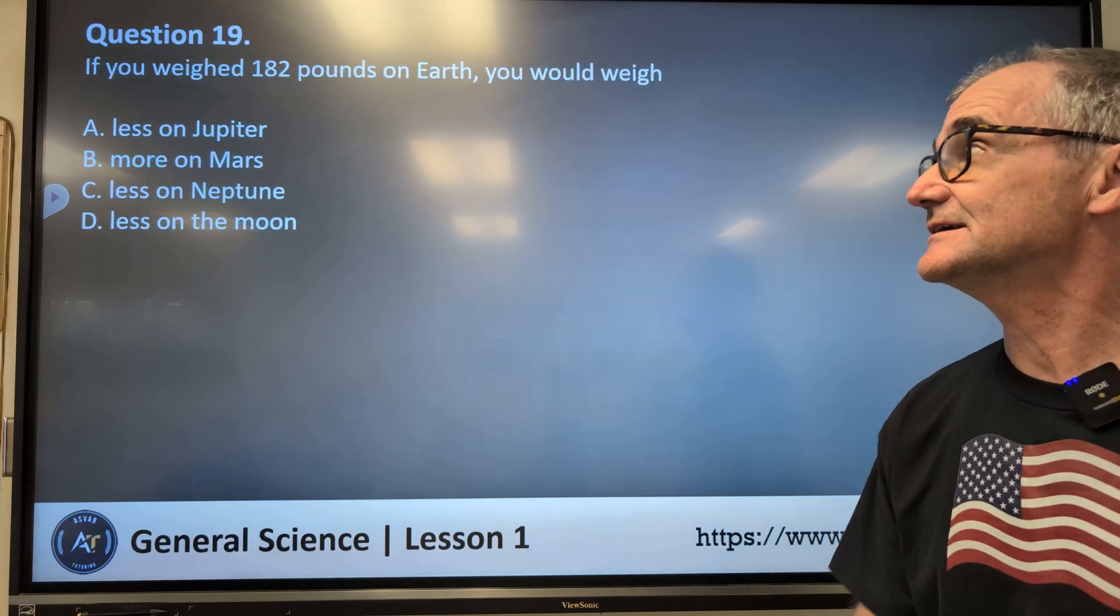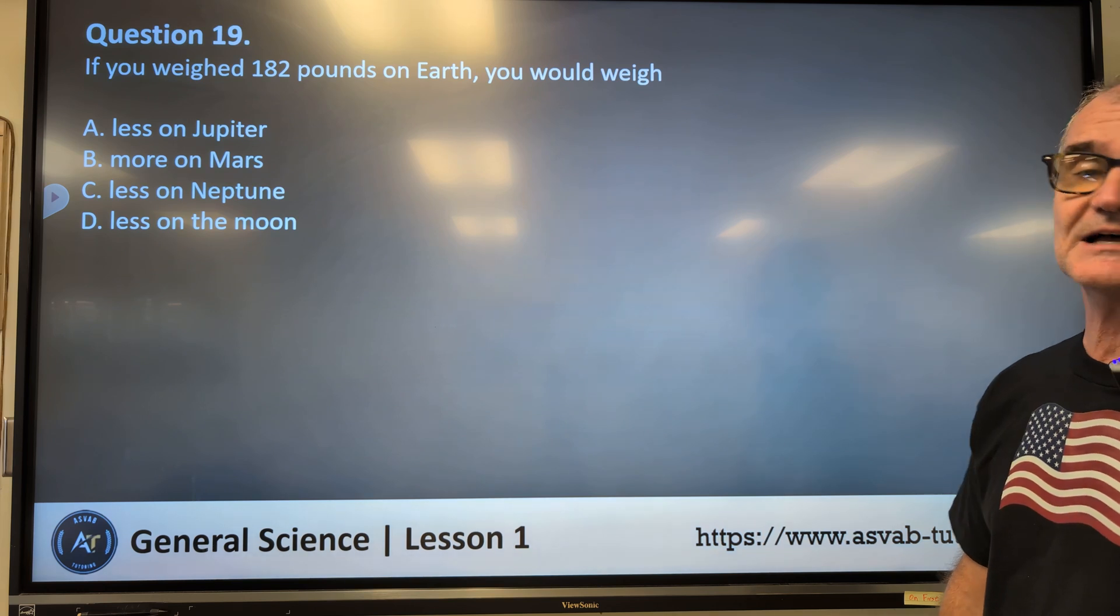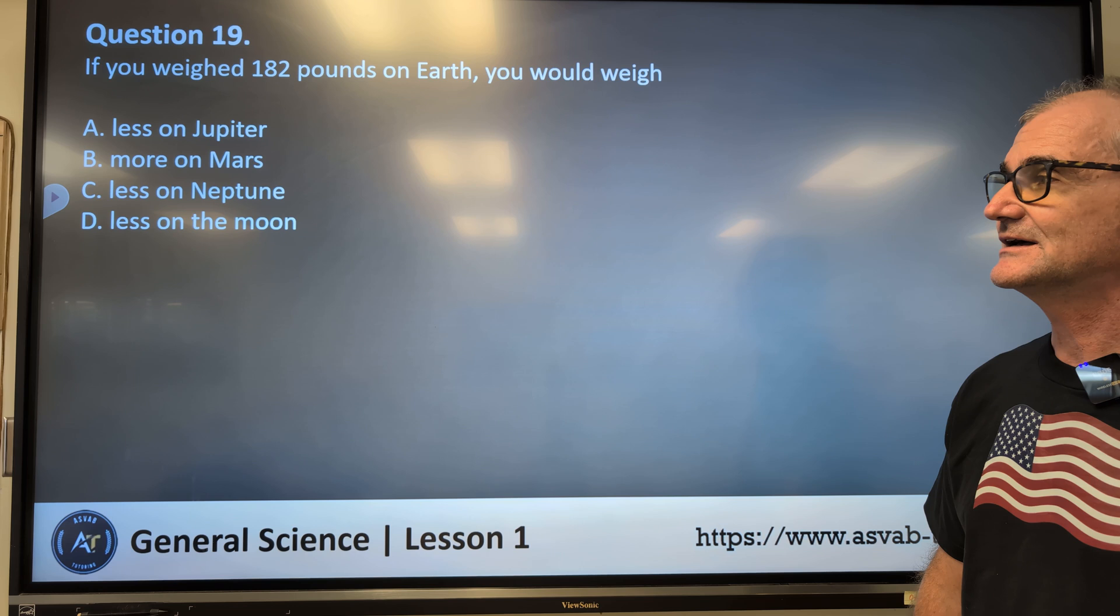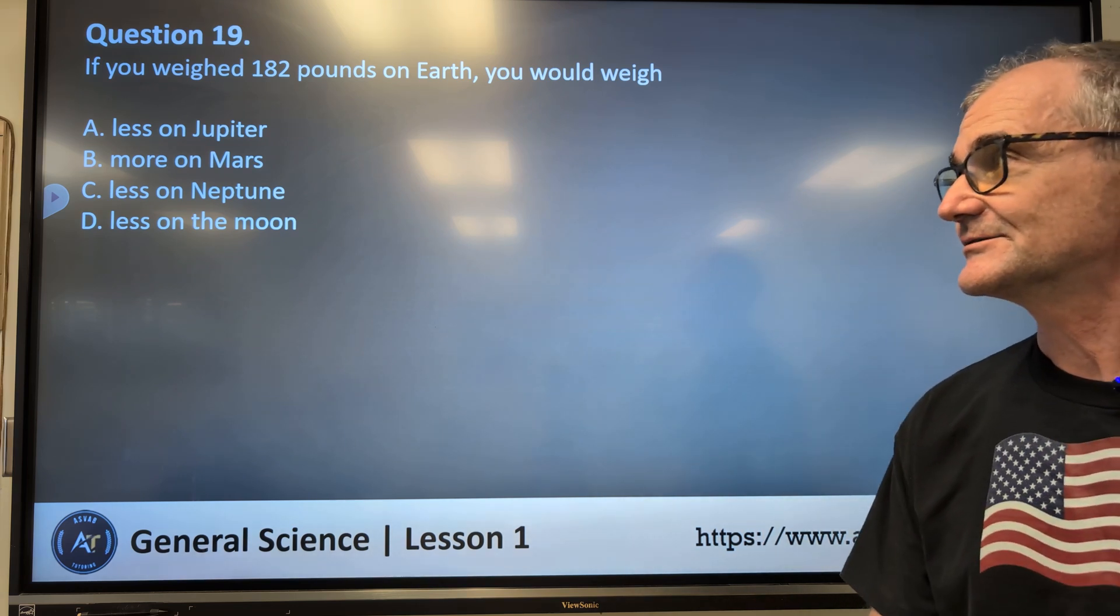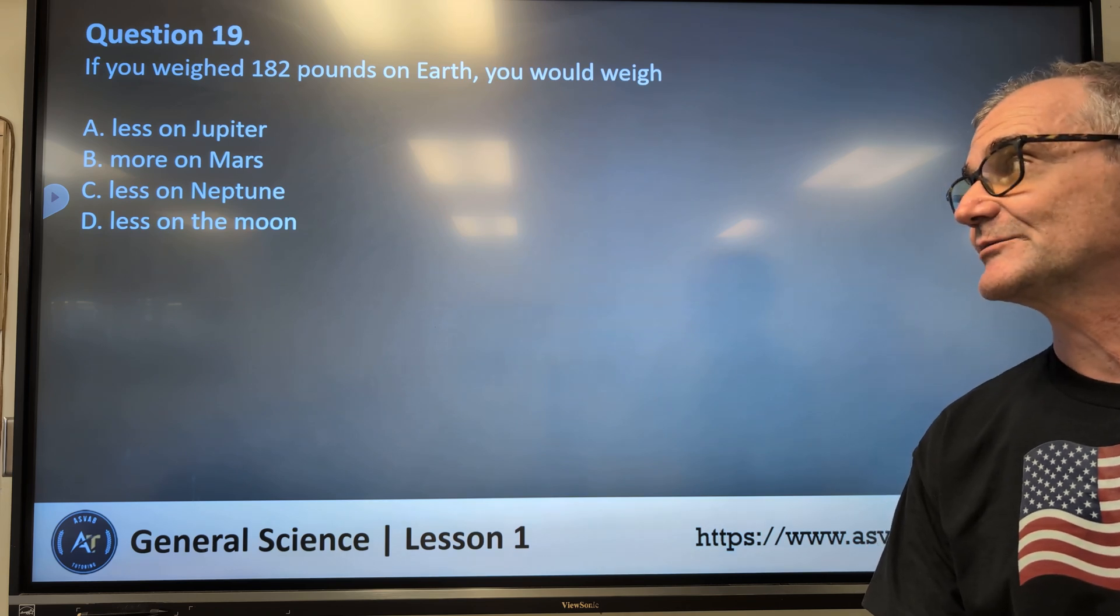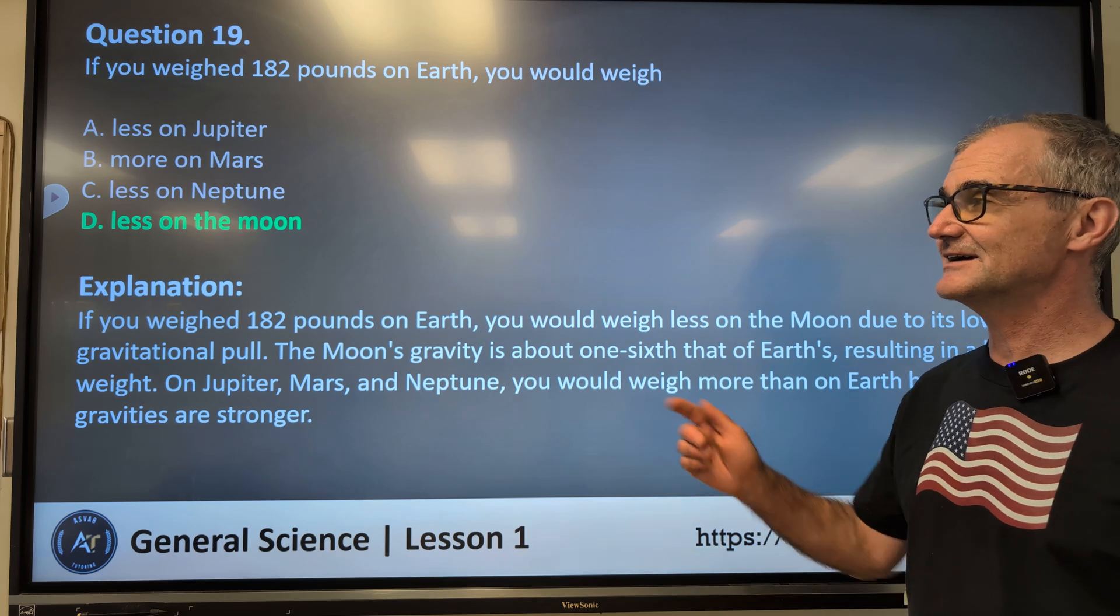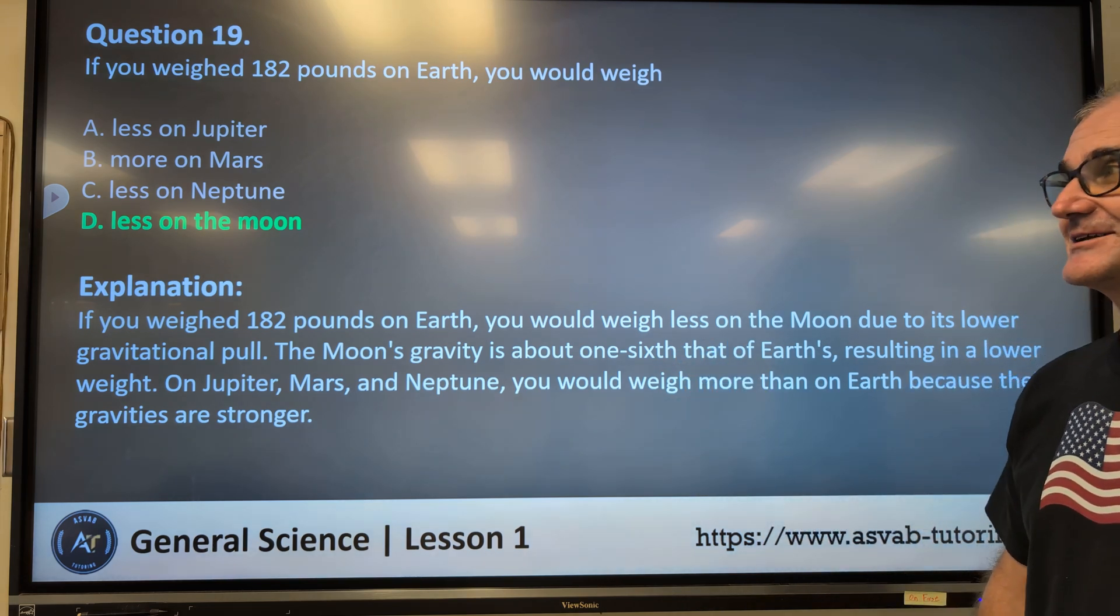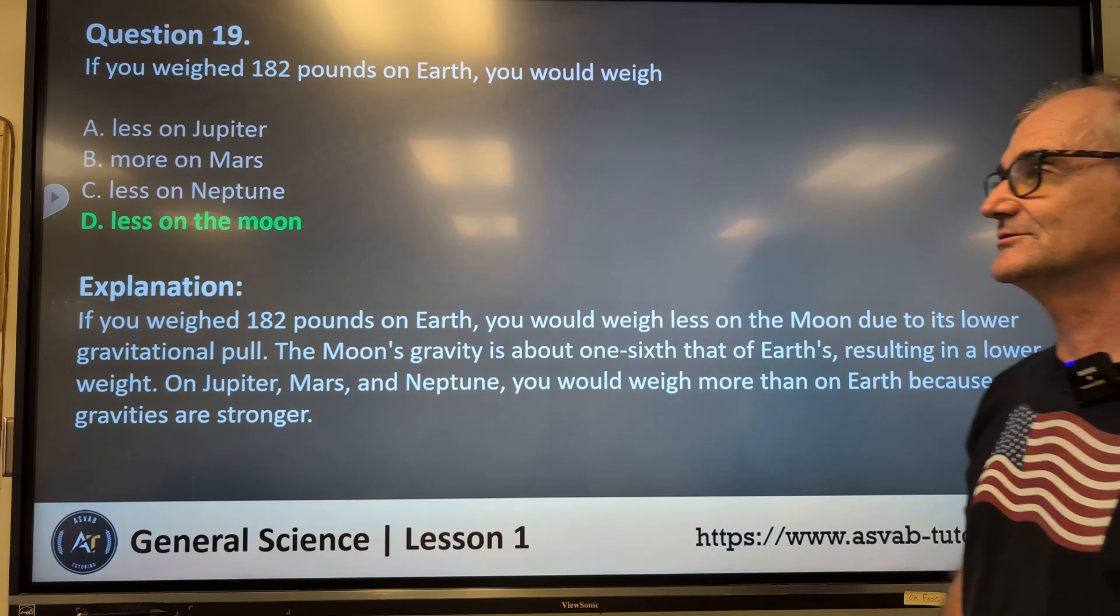Problem number 19. If you weighed 182 pounds on Earth, you would weigh less on Jupiter, more on Mars, less on Neptune, less on the Moon. I want to think that one through and then come up with an answer. The correct answer is D, less on the moon. I knew that one was true, but I wasn't sure about the other ones. I thought there might have been a couple of true ones. If you weighed 182 pounds on Earth, you would weigh less on the moon due to its lower gravitational pull.